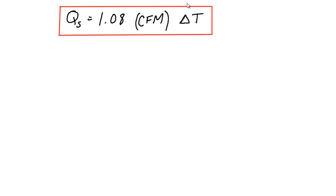Hello and welcome back. In this installment we're going to be covering the shorthand form of the sensible heat equation, Q equals 1.08 CFM delta T, something that is near and dear to HVAC engineers across the world.